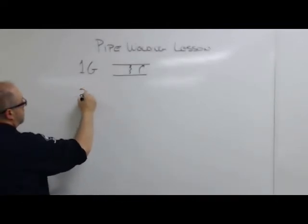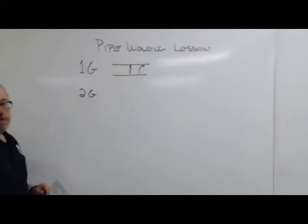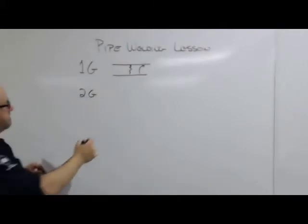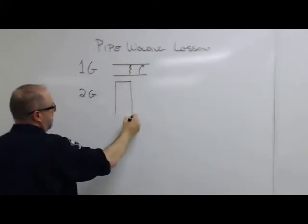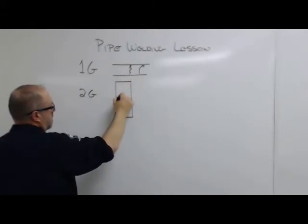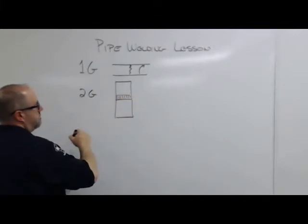So, 2G. 2G is this pipe straight up and down. That's 2G. Okay? We don't have three. We don't have four. But we do have five.